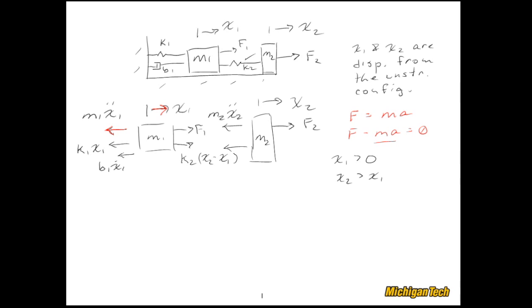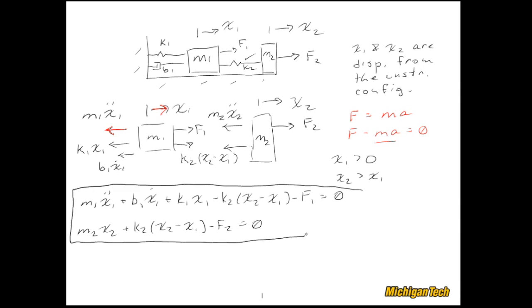And at this point, we're done. We can just write out these equations. We have M1 X1 double dot plus B1 X1 dot plus K1 X1 minus K2, like so, minus F1 equals zero. And the second mass looks like that. And I can even draw a lopsided box around these and say that we're done generating those equations of motion. Great.